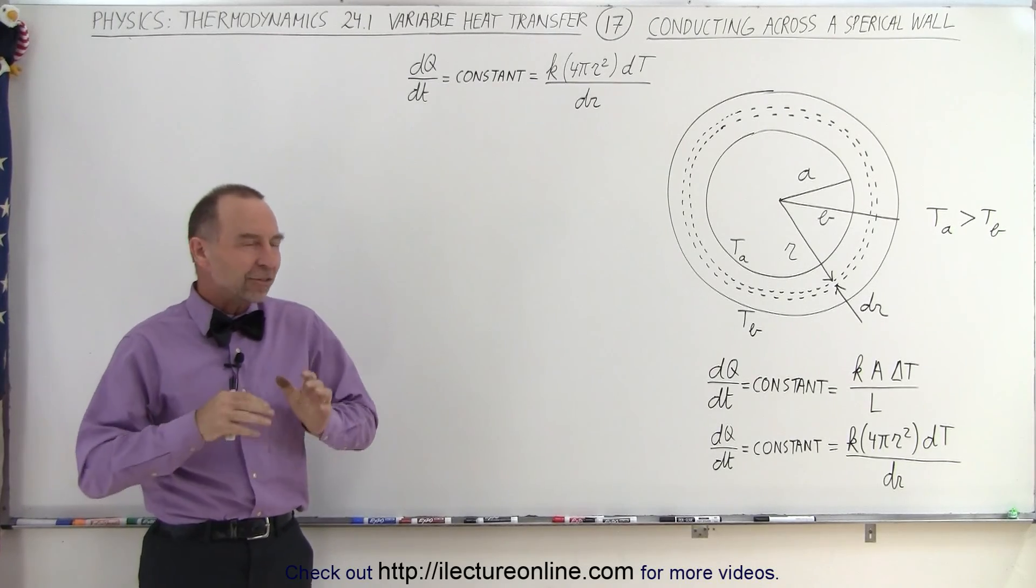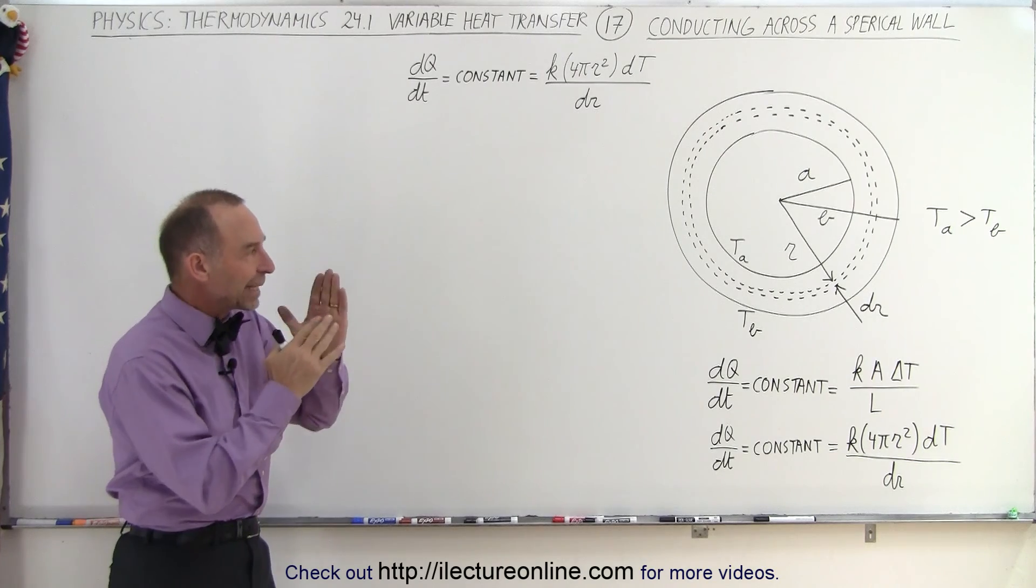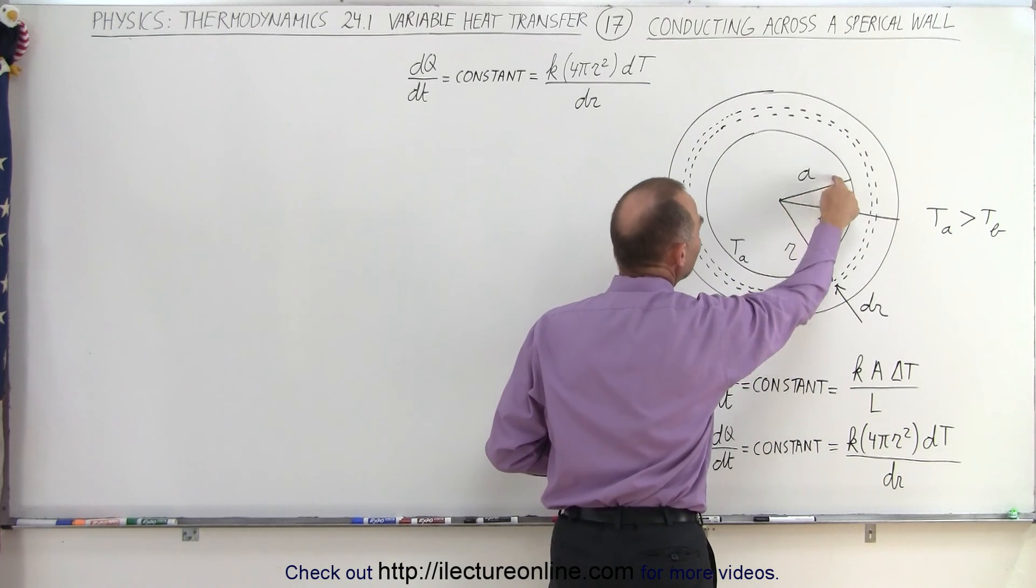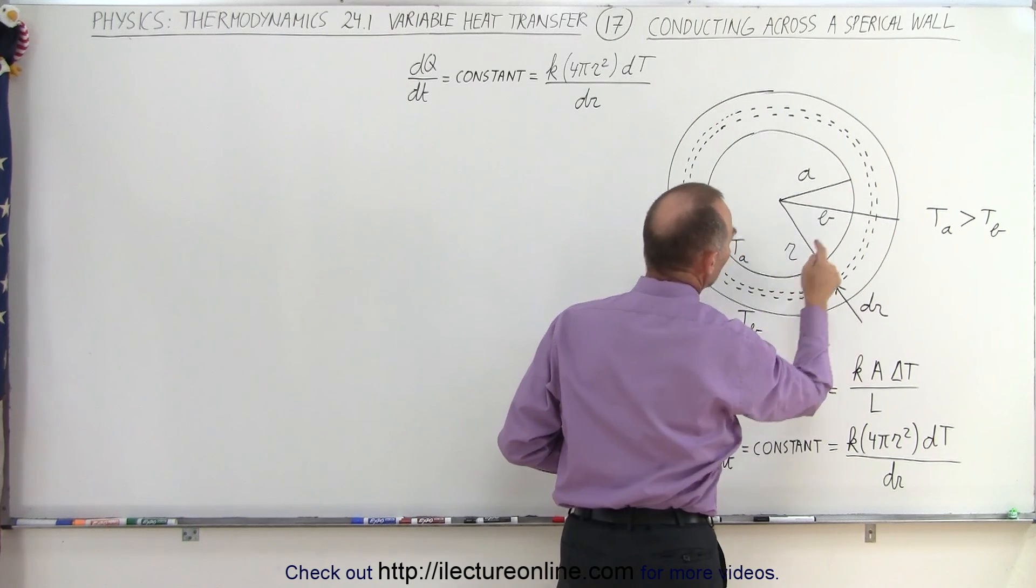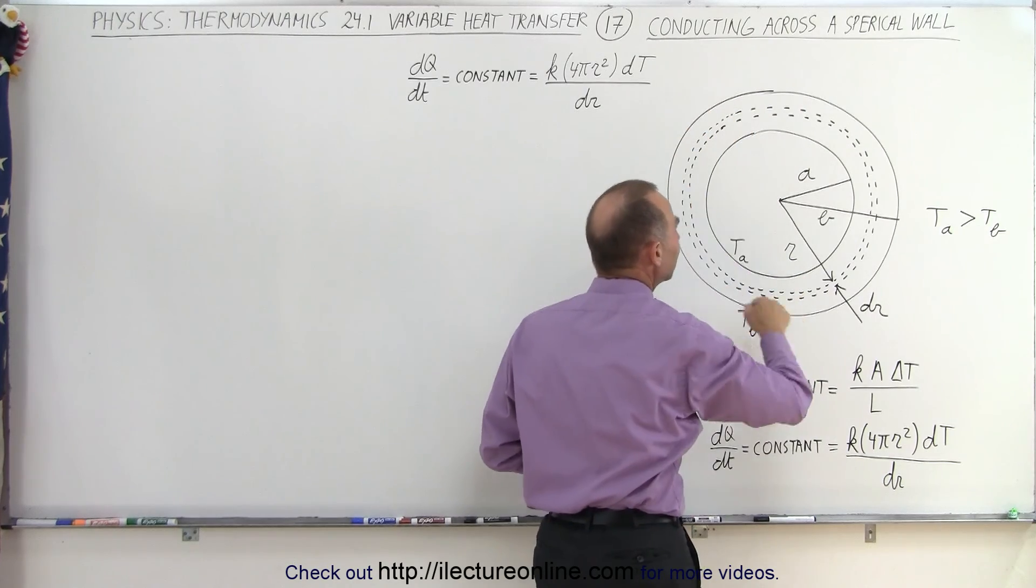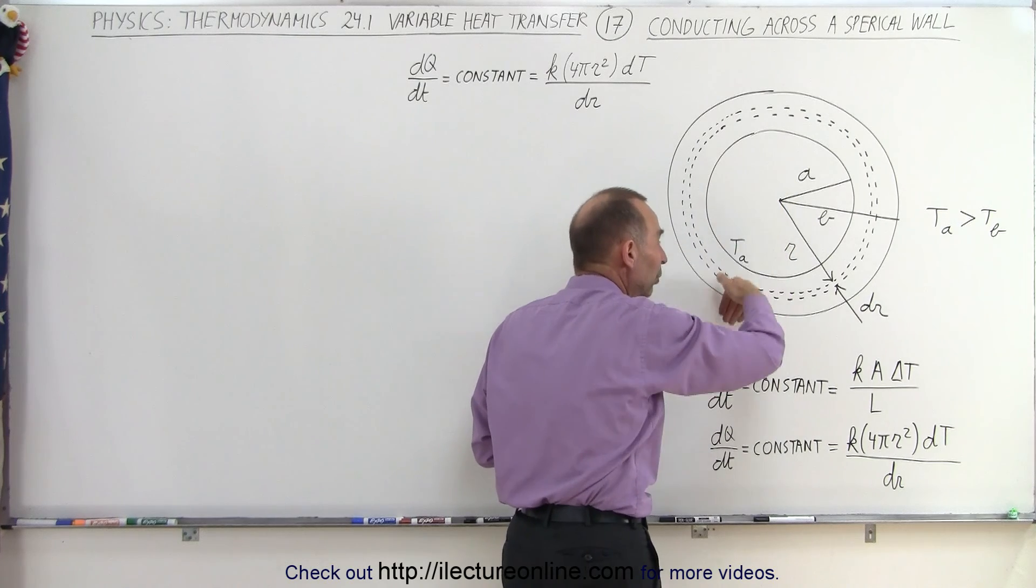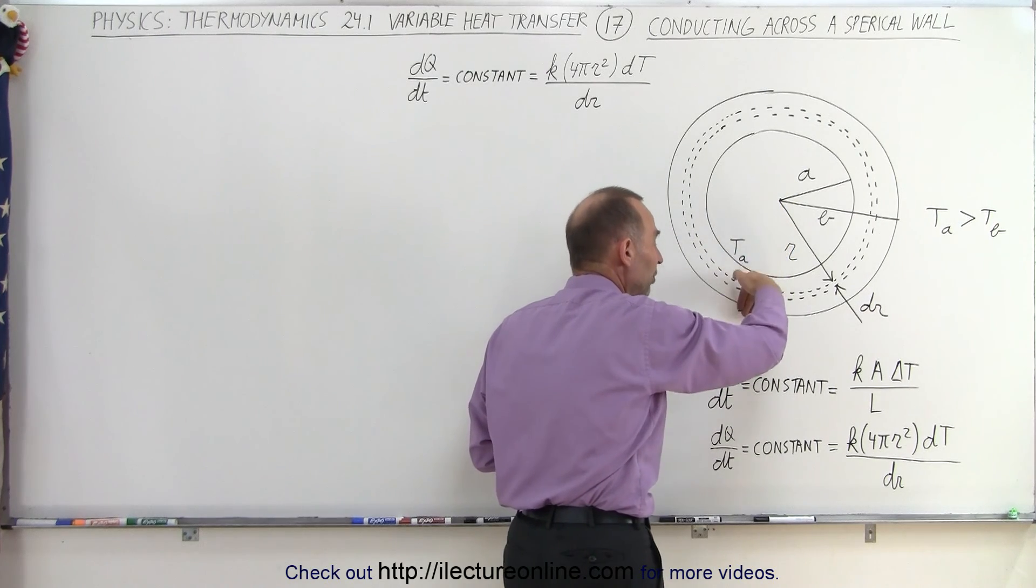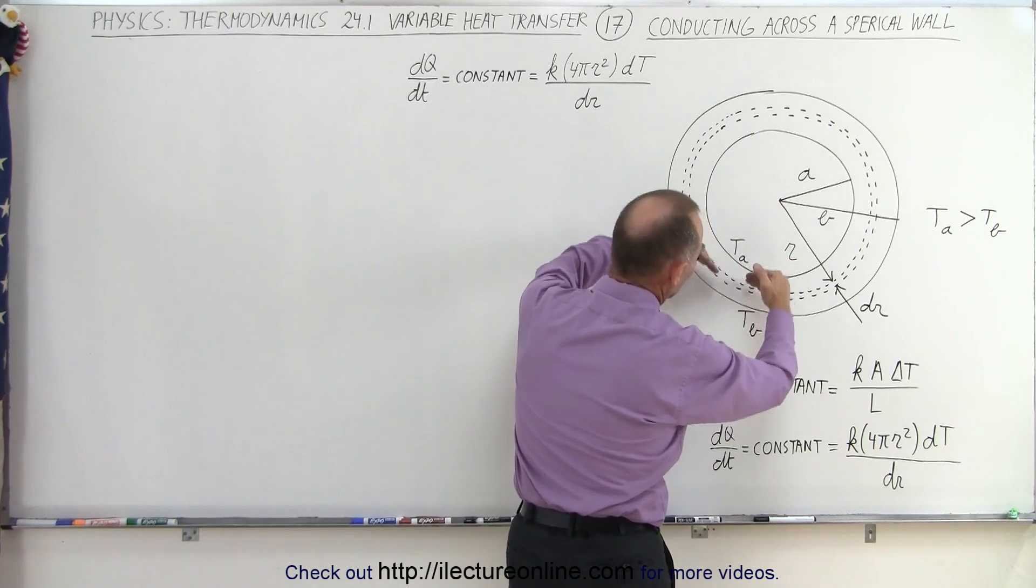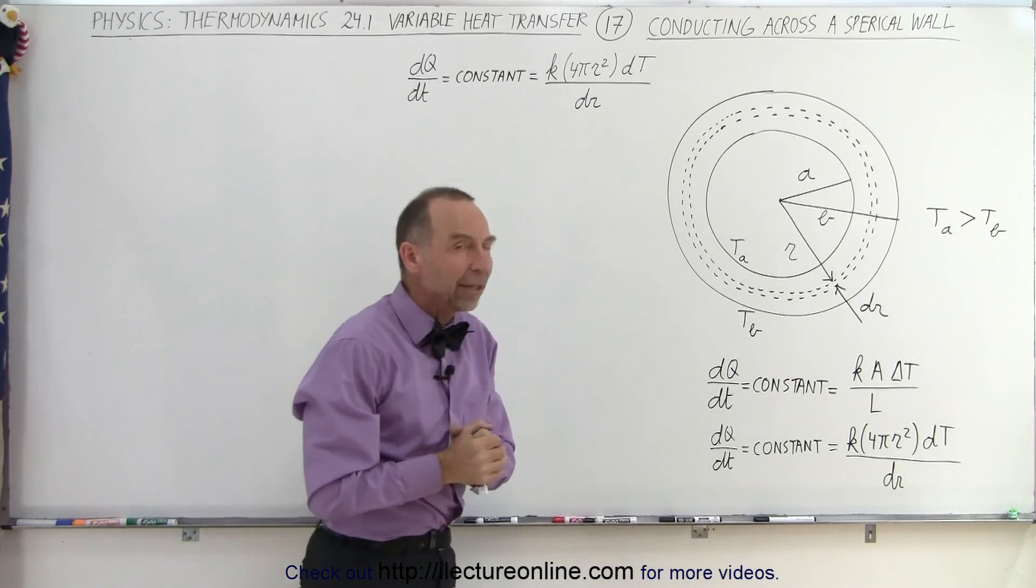Welcome to ElectronLine. Now let's talk about a spherical shell and the heat transferring from the inside to the outside. Here we have a shell with an inner radius of A and an outer radius of B, with a temperature on the inside T sub A and a temperature on the outside T sub B. Assuming that the temperature is greater on the inside than the outside, heat will then flow from the inner surface to the outer surface and radiate outward. But we're concerned about the heat conduction across that spherical shell. And so how do we do that?